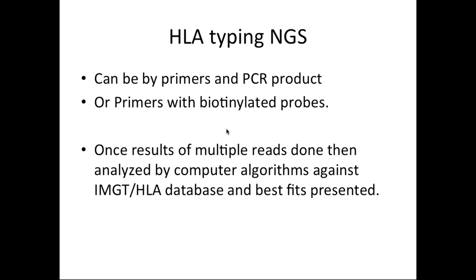HLA typing by NGS — next gen sequencing — is similar in thought process but different in execution. It can use primers with a PCR product, or primers with biotinylated probes. To get next gen sequencing, you need multiple reads that overlap with each other so that the whole gene is covered. These multiple reads are put into a computer algorithm, which runs against the HLA database, and the algorithm gives you the best fits for the HLA alleles that this person has.